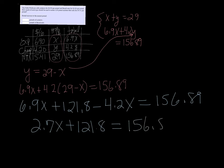And then I want to subtract 121.8 on each side. That gives me 35.09. And so I get 2.7X equals 35.09, and if I divide that by 2.7, I get X.